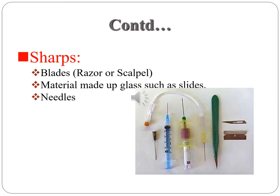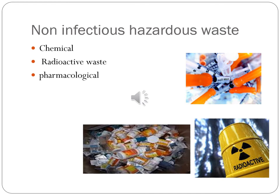In infectious waste, the last subtype is sharps. Sharps contain blades, material made up of glass such as slides, as well as needles. These are the general infectious waste. Next type is non-infectious or hazardous waste. These waste are chemical waste, radioactive waste, as well as pharmacological waste. So these are the general classifications of biomedical waste.